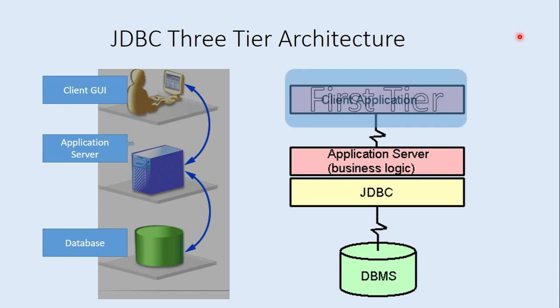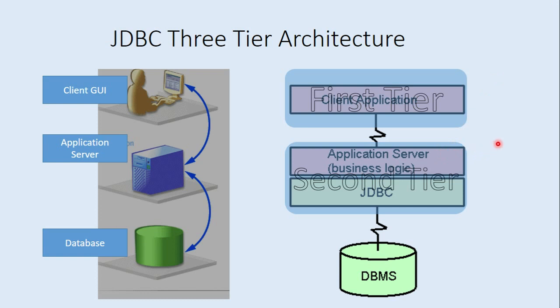So the client application — your browser or servlet — is the first tier, which communicates to the application server, which is the second tier. The application server forwards messages from the client to the database, and the database forms the third tier. These are the different tiers supported by the JDBC API.